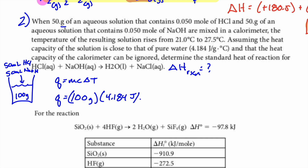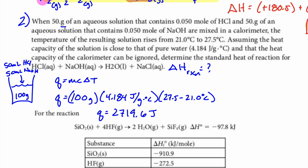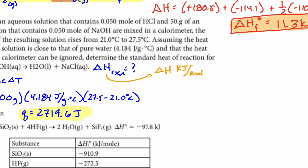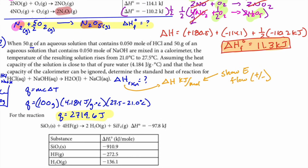Plugging in: mass = 100 g, specific heat capacity = 4.184 J/g·°C, and ΔT = 27.5 − 21.0 °C. That gives the joules of energy released. ΔH is usually expressed per mole — in kilojoules per mole — and it also indicates the direction of energy flow with a plus or minus sign.